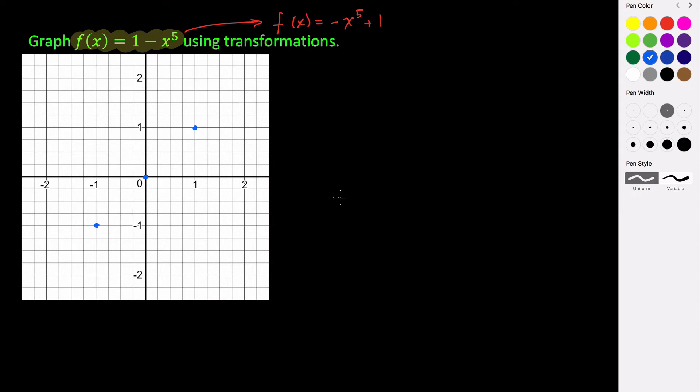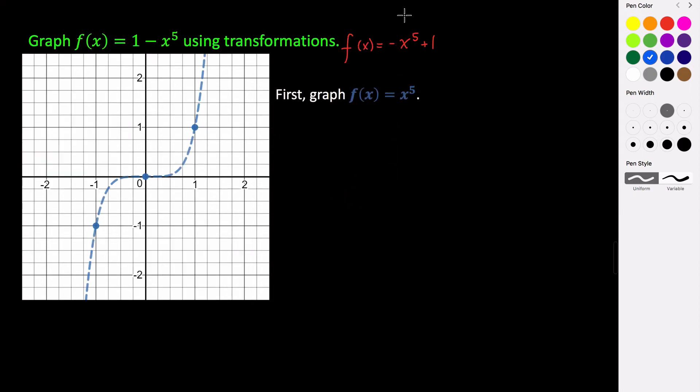So if you graph the parent function, it's going to look something like this. So again, here's our function rewritten in standard form, and then our parent function looks something like this. So it goes through the points (-1, -1), (0, 0), and (1, 1).